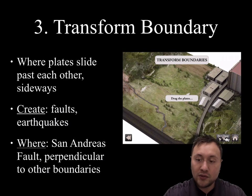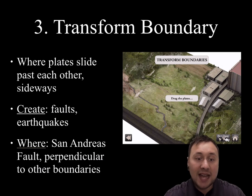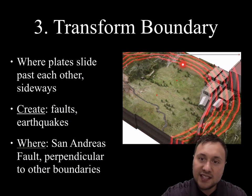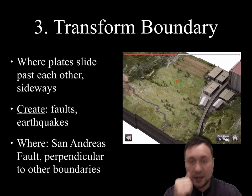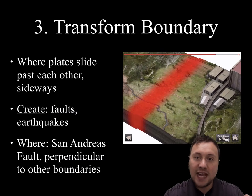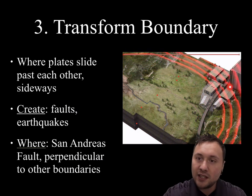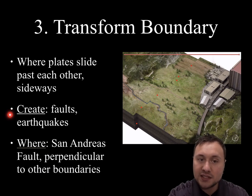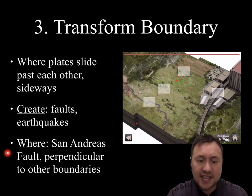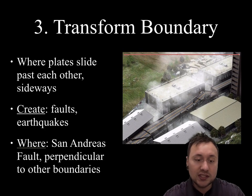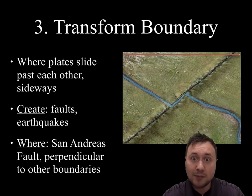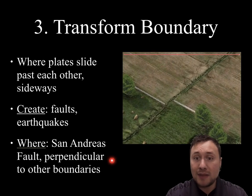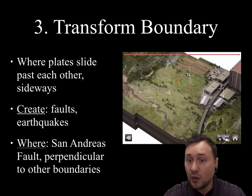Transform boundaries are where plates slide past each other sideways. Pressure builds up as they move in opposite directions, and when they finally release and snap, it releases energy in the form of an earthquake — causing massive shaking and damage. Transform boundaries don't create many landforms, but they do create faults and earthquakes. The classic example is the San Andreas Fault, which has a big valley you can actually go and photograph — it's very obvious and clearly observable.